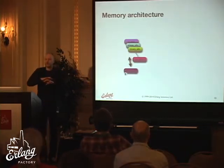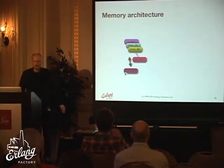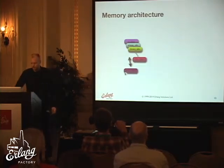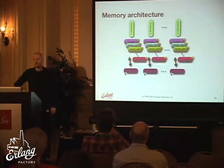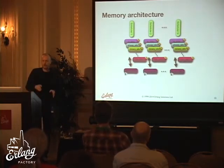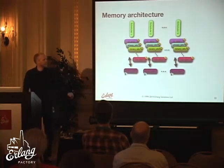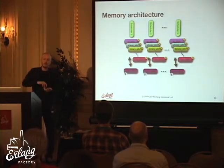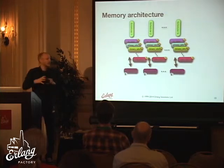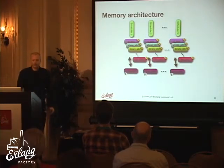There's one chain of allocators per scheduler in the system — one ETS alloc for scheduler 1, one for scheduler 2, and so on. They're all local and can take advantage of NUMA architecture. To pass memory between schedulers, we send a message to that scheduler to do the free, because there are no locks on the actual allocators — we want them to be lock-free. So allocations between schedulers are handled by message passing.